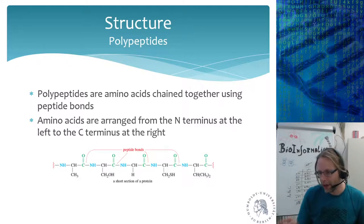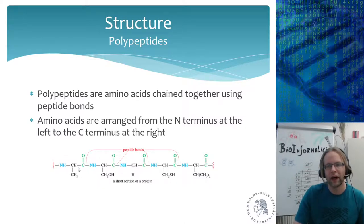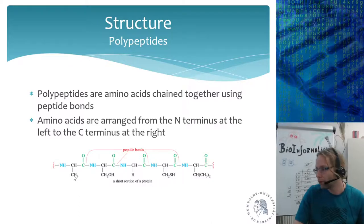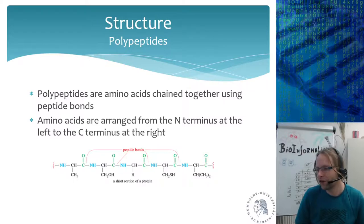From amino acids we go to polypeptides. Polypeptides are amino acids chained together using peptide bonds. Here we see the N-terminus of the first amino acid — which one is this with the methyl group? A quick question for you in chat.